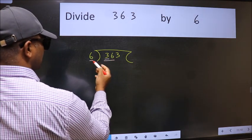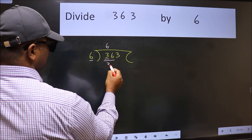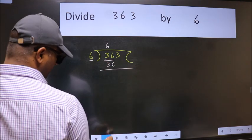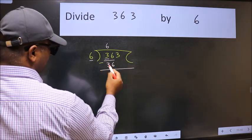When do we get 36 in 6 table? 6 times 6 equals 36. Now we should subtract. We get 0.